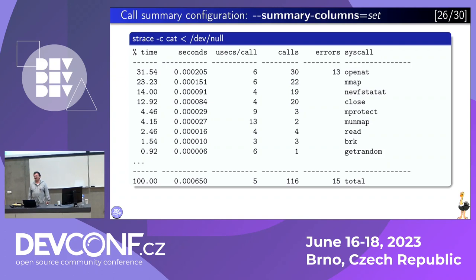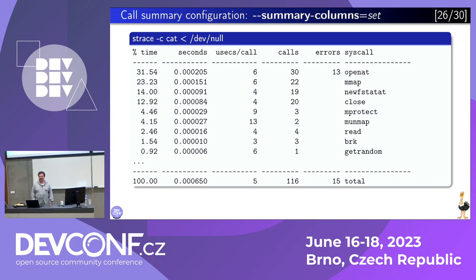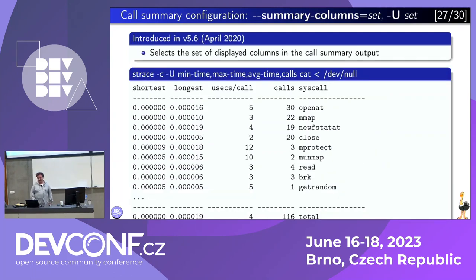We have one more option to control the statistics output. Because for the last few years we added a few features for gathering statistics — we can gather more different information about system calls. But by default we show this standard output. If you look into the man page, you would see that there are more options. For example, you can specify additional parameters you are really interested in.